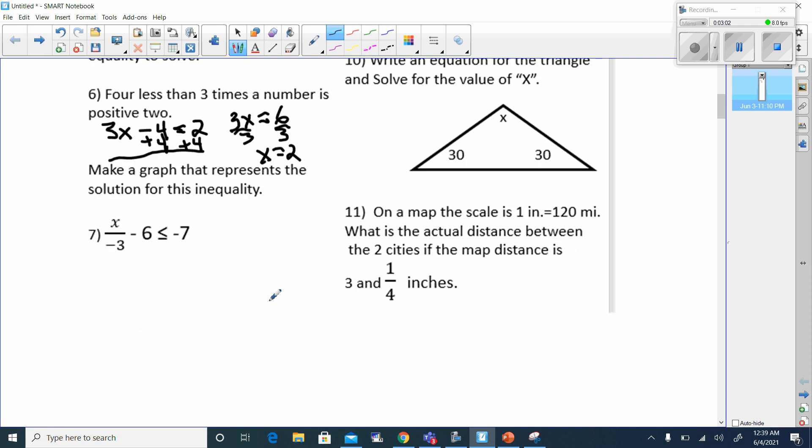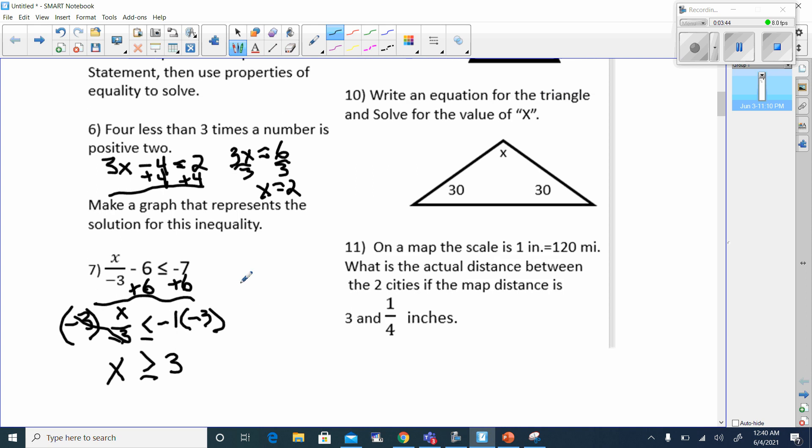I'll make a graph that represents this. If I made a graph that represents this, I'd add 6 over here, which means I'm adding 6 over here. Now I've got x over negative 3, and that has to be less than or equal to negative 7 plus 6, which is negative 1. The only way to get rid of this negative 3 is to multiply it by negative 3, which means I have to multiply this by negative 3. I have to remember that when multiplying by a negative number, I turn my inequality around. x is left by itself because these cancel out, and negative 1 times negative 3, that's going to be a positive 3.